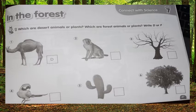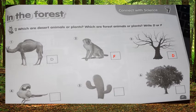What about the tree in number three? Do you think it would live in a desert or a forest? It looks dry and has no leaves — it lives in the desert, excellent! Number four is a parrot. Where does the parrot live? The parrot lives in the forest — excellent!